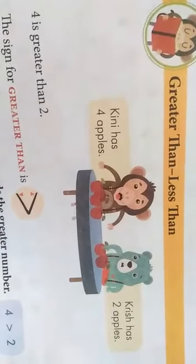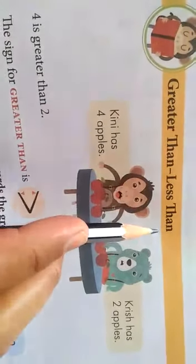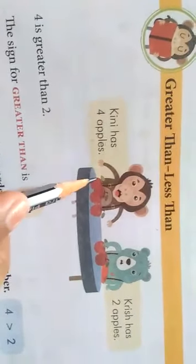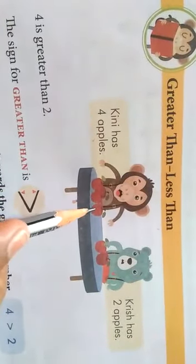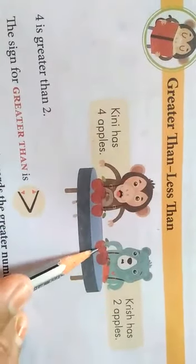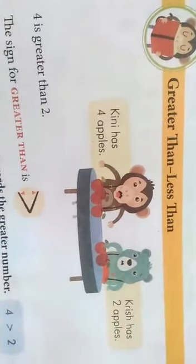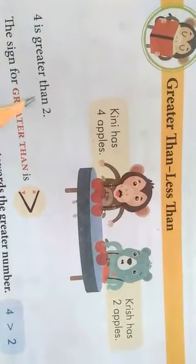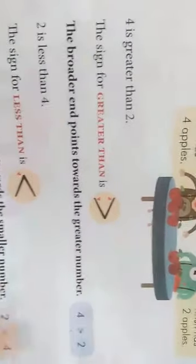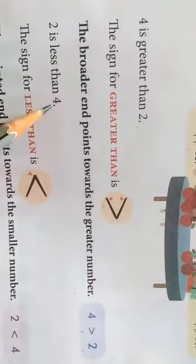Our next topic is greater than and less than. Kenny has 4 apples: 1, 2, 3, 4. Krish has 2 apples: 1, 2. So 4 is greater than 2. The greater than sign is this. So we write: 4 is greater than 2. And 2 is less than 4.